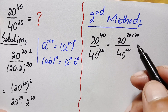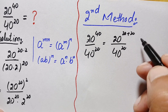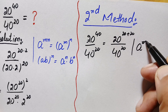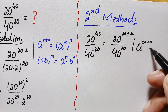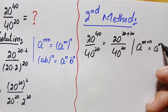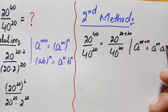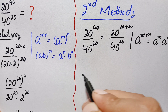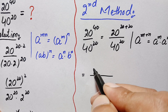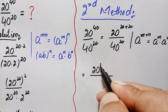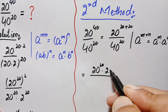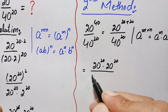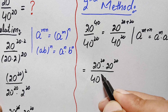In the numerator we use the exponential identity: a raised to power m plus n equals a raised to power m times a raised to power n. Using this identity, the numerator becomes 20 raised to power 20 times 20 raised to power 20, divided by 40 raised to power 20.